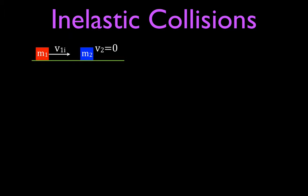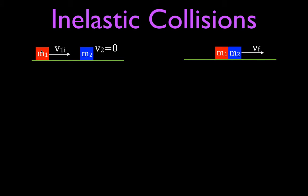Now we'll talk about the equation for the most common form of inelastic collision. One object is moving with some initial velocity, another object is stationary. They collide, stick together — it's a perfectly inelastic collision — and move off together with a single final velocity, because they're stuck together as one object.